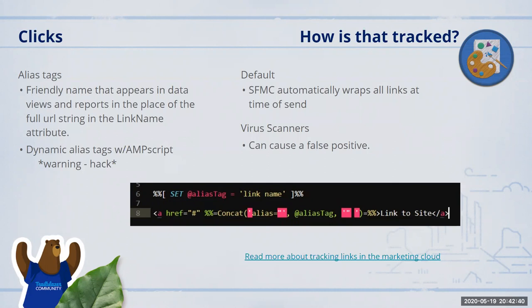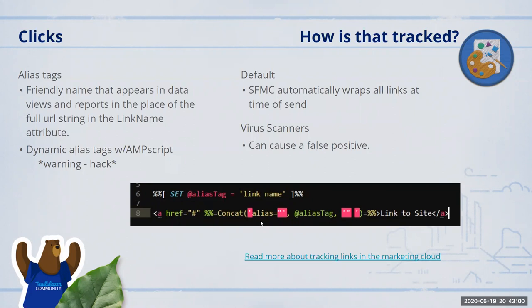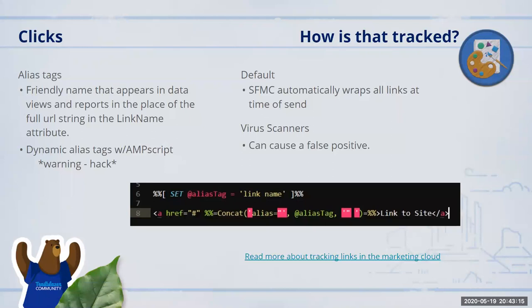There are two ways to apply alias tags: one is hard-coded by applying an alias tag to your URL — alias equals, and then the tag name — or you can drive them in dynamically. If you drive them in dynamically using AMPscript, warning: this is a hack. This is not supported by Salesforce Marketing Cloud. If you call support for help, they are going to tell you this is set up wrong and you'll need to correct it, as alias tags cannot be driven in dynamically. However, if you break the tag itself and rebuild it with a concat function, you can drive variables into your alias tags, which makes it easier to apply them at time of send for your templated solutions.